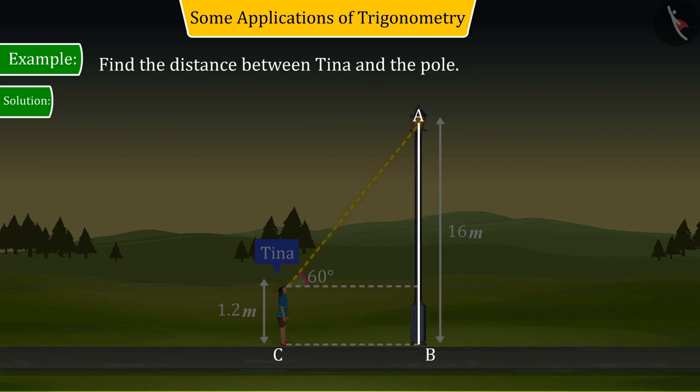And let's also assume that the distance between Tina and the pole is BC, where the measurement of BC is represented by X meters.